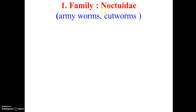The first family, and one of the largest families, is Noctuidae. Noctuidae comprises insects which are very active during night time or evening times. The common name is army worms or cut worms. Please remember, in all the orders, the family names and their common names are very, very important.